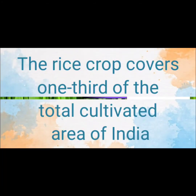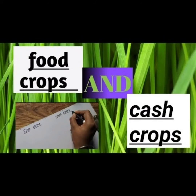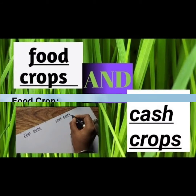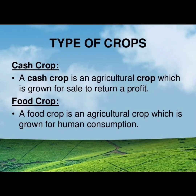Now I want to tell you about food crops and cash crops. A cash crop is an agricultural crop which is grown for sale to return a profit. Cash crop is a crop which we do not eat — we just grow it for sale to earn money and profit. For example, cotton: with the help of cotton we make clothes, which fulfills our clothes requirement and our money requirement. But we do not eat cotton, that's why it's called a cash crop.